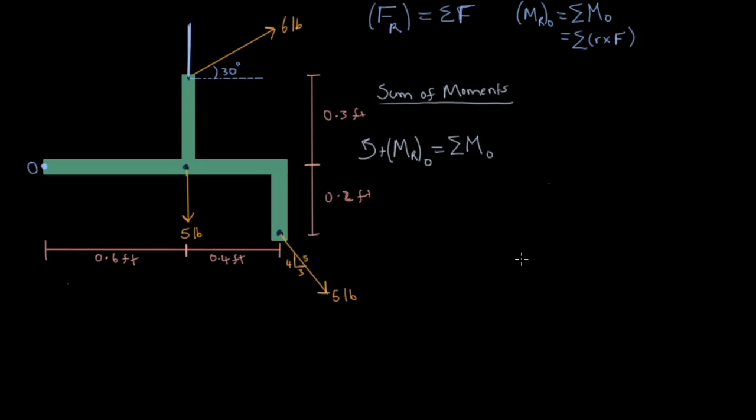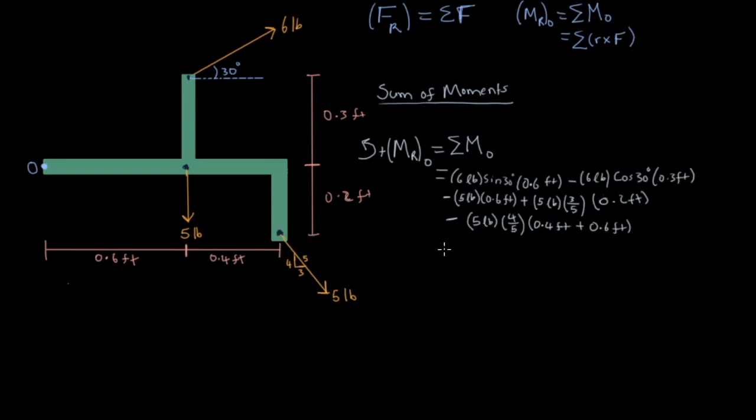That is, this vertical force times its perpendicular distance to the origin, plus this horizontal component times its perpendicular distance, plus this vertical force times its perpendicular distance, plus this vertical force times its perpendicular distance. And finally, this horizontal component times its perpendicular distance. And in doing so, we get this, which gives us negative 6.16lb-ft. The negative sign means we have a clockwise moment.